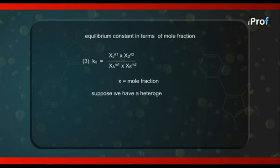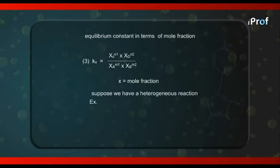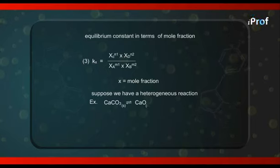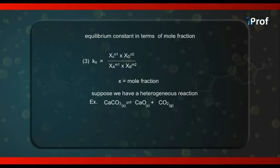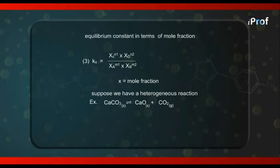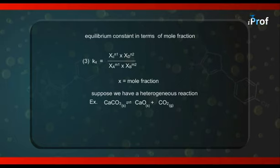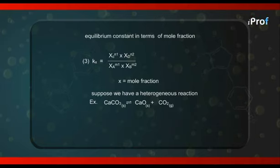Suppose we have a heterogeneous reaction. An example is: CaCO3 (solid) ⇌ CaO (solid) + CO2 (gas). So far we have been dealing with homogeneous reversible reactions; now let us consider a heterogeneous one. For this reaction occurring in a closed vessel — it should not be carried out in an open vessel, otherwise all the CO2 will escape into the atmosphere and the reaction will become irreversible. Suppose equilibrium has been attained in a closed vessel — what will be the expressions for Kc and Kp?